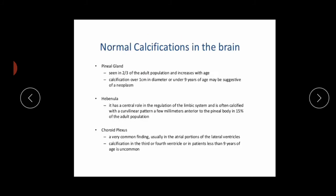Normal calcifications in the brain: the pineal gland is seen in two-thirds of the adult population and calcification increases with age. Calcification over one centimeter in diameter or under nine years of age may be suggestive of neoplasm. The habenula has a central role in regulation of the limbic system and is often calcified with a curvilinear pattern of a few millimeters, anterior to the pineal body, in 15% of the adult population.